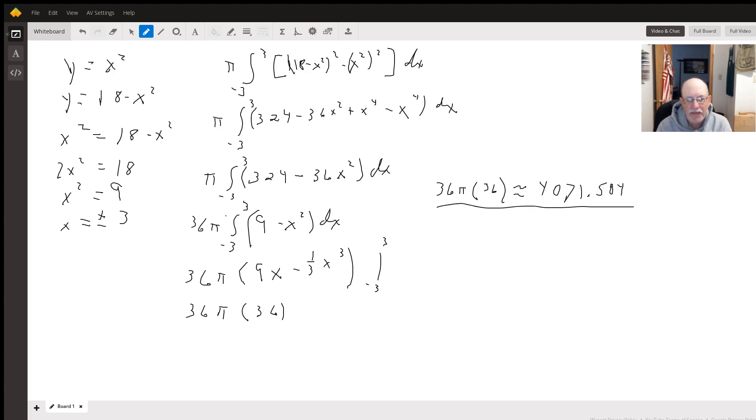We can factor a 36 out of that just to make our integral a little easier to deal with. So we get 36 pi times the integral of negative 3 to 3 of 9 minus x squared dx.